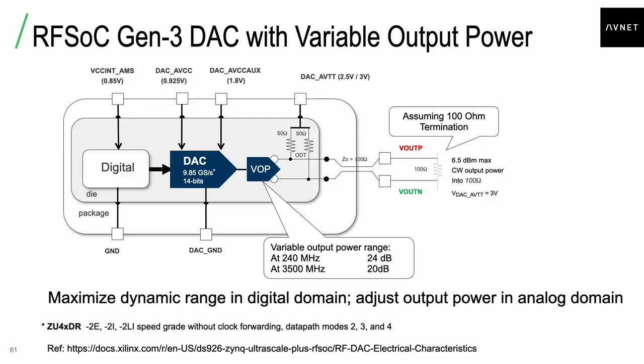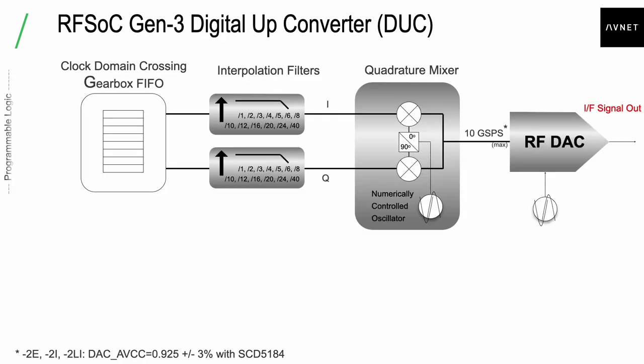I could spend an hour describing the RFSOC, but just a few highlights. One of the most important is variable output power, which avoids having to back off in the digital domain and sacrifice SNR due to quantization noise. You can trim the output power of the DACs in the analog domain. Additionally, the digital up converter and digital down converter are hardened IP, so they don't consume resources in the programmable logic — far more efficient than building them in FPGA fabric.